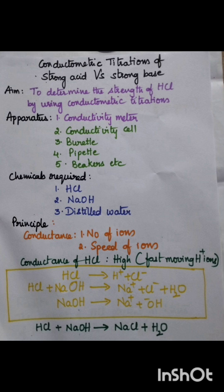Coming to the principle: whenever HCl is titrated against NaOH it results in the formation of NaCl plus H2O. Initially, the conductance of any substance depends upon two factors: number of ions and speed of ions.